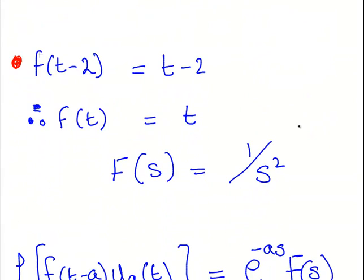f of t minus, this is our part f of t minus a, or f of t minus 2. So necessarily a is going to be 2. And that is t minus 2. What we're going to do is replace that with f of t to determine what f of t is. f of t necessarily is, replace t minus 2 with t, so you just get t.